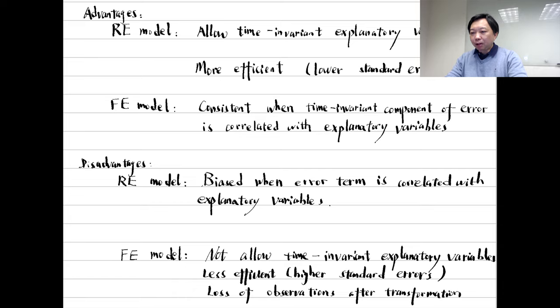However, the random effects model has its disadvantages. If part of the error term is correlated with the explanatory variables, the random effects estimator is biased.